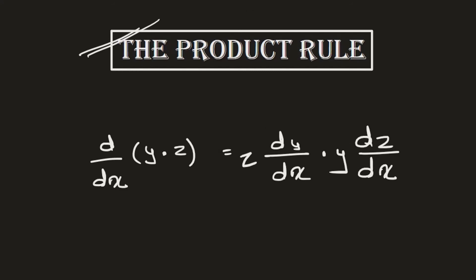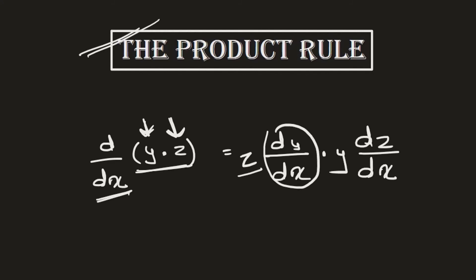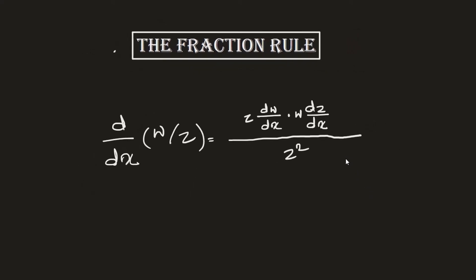The product rule is similar to the sum rule. If y·z is a function of x, you differentiate both terms separately, but when differentiating the first term you keep the second as constant, and vice versa. So the derivative of y·z is: (dy/dx)·z + y·(dz/dx), and the sum of these two is the final output.